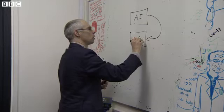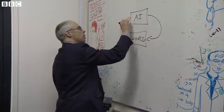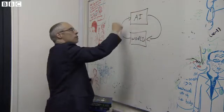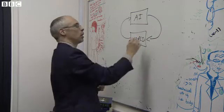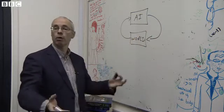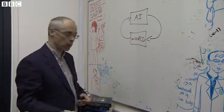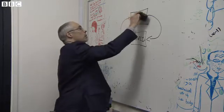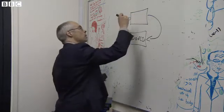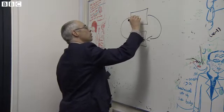And so it has this sort of sensory motor loop with which it interacts with the same world of physical objects that we interact with. And it's embodied in that sense. So really what we're talking about here is a robot. So a robot is an embodied artificial intelligence.